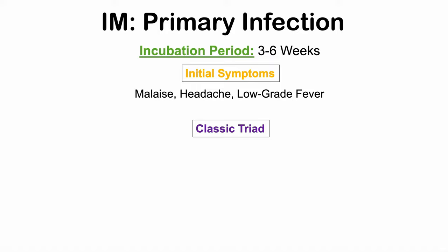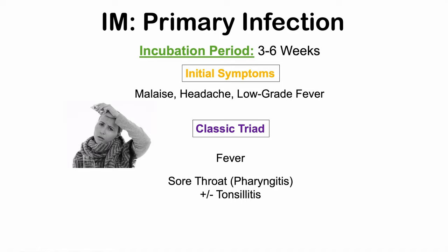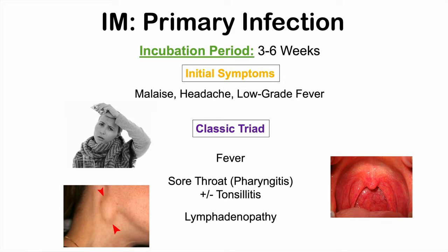There is a classic triad of symptoms of mononucleosis: fever, sore throat (pharyngitis, plus or minus tonsillitis), and lymphadenopathy — swollen, tender lymph nodes. The lymphadenopathy occurs in the cervical chain, particularly the posterior cervical chain, meaning the lymph nodes on the back side of the neck. Swollen, tender lymph nodes at the back of the neck combined with these other symptoms is a classic presentation of mononucleosis.